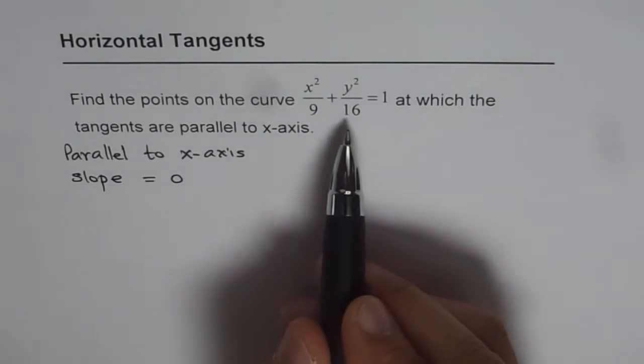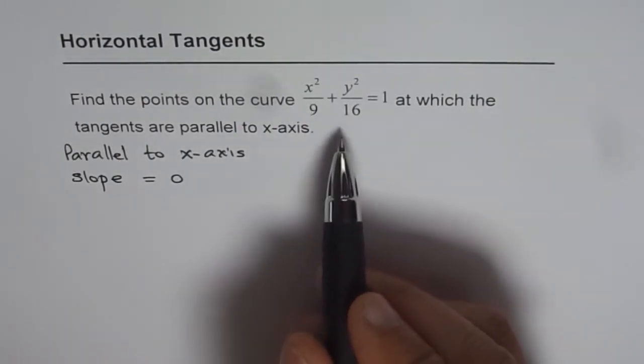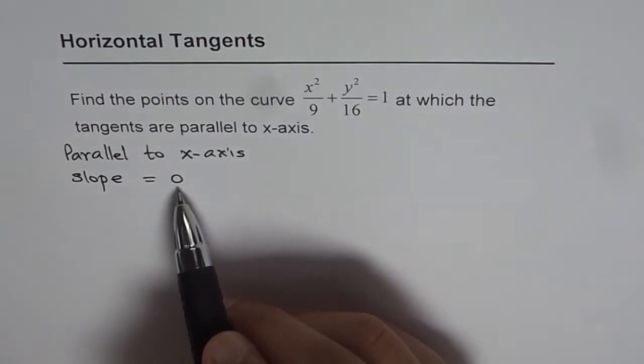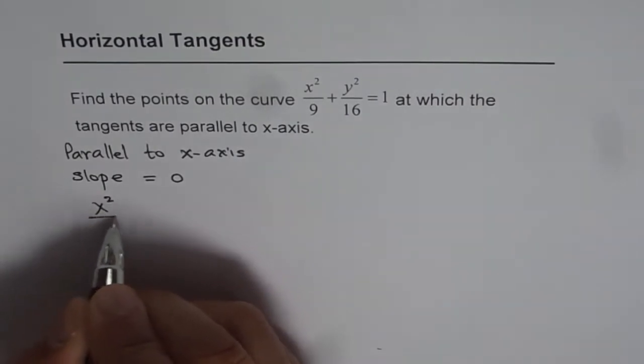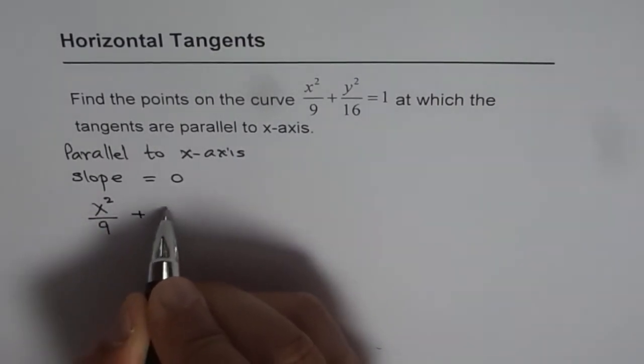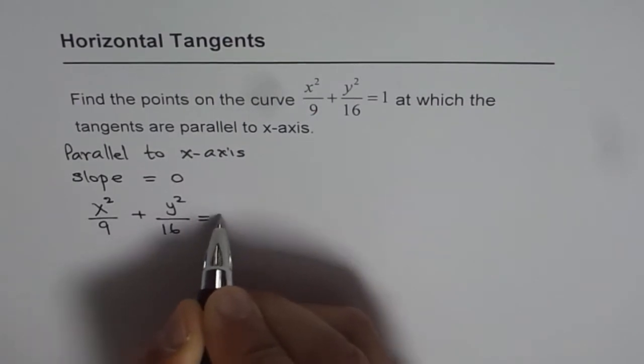We have the given function. We can differentiate with respect to x and equate the derivative to 0 to find the points. So let's do that. We have the function x²/9 + y²/16 = 1.